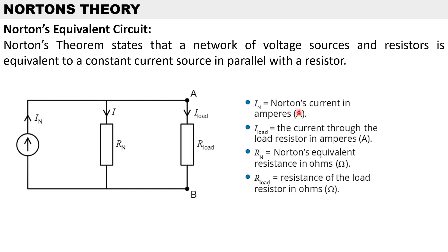IN is Norton's current in amperes. IL is the current through the load resistor in amperes. Norton's equivalent resistance in ohms is known as RN, and then we have the load resistance in ohms.